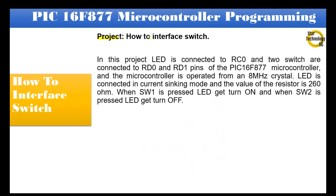Project — How to interface a switch: In this project, an LED is connected to RC0 and two switches are connected to RD0 and RD1 pins of the PIC16F877 microcontroller. The microcontroller is operated from an 8 MHz crystal. The LED is connected in current sinking mode and the value of the resistor is 260 ohm. When we press SW1 the LED turns on, and when we press SW2 the LED turns off.